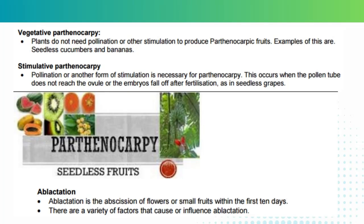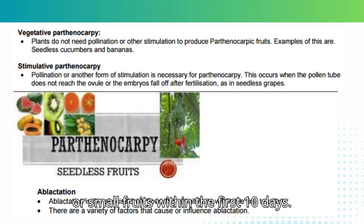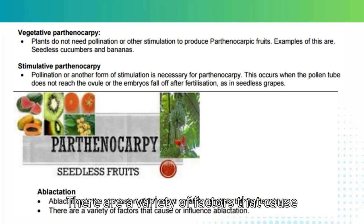Ablactation is the abscission of flowers or small fruits within the first 10 days. There are a variety of factors that cause or influence ablactation.